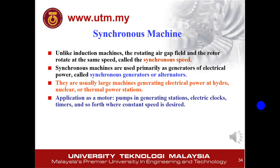The reason the synchronous machine is called a synchronous machine is because the speed of the rotor as well as the rotating air gap field are the same — it is called the synchronous speed. Synchronous machines are usually used as generators of electrical power, also known as alternators, in large machines generating electrical power at hydro, nuclear, and thermal power plants. Other examples include pumps, electrical clocks, timers, and constant speed applications. If constant speed is desired, you should use a synchronous machine, as the induction machine is quite hard to control in terms of speed.